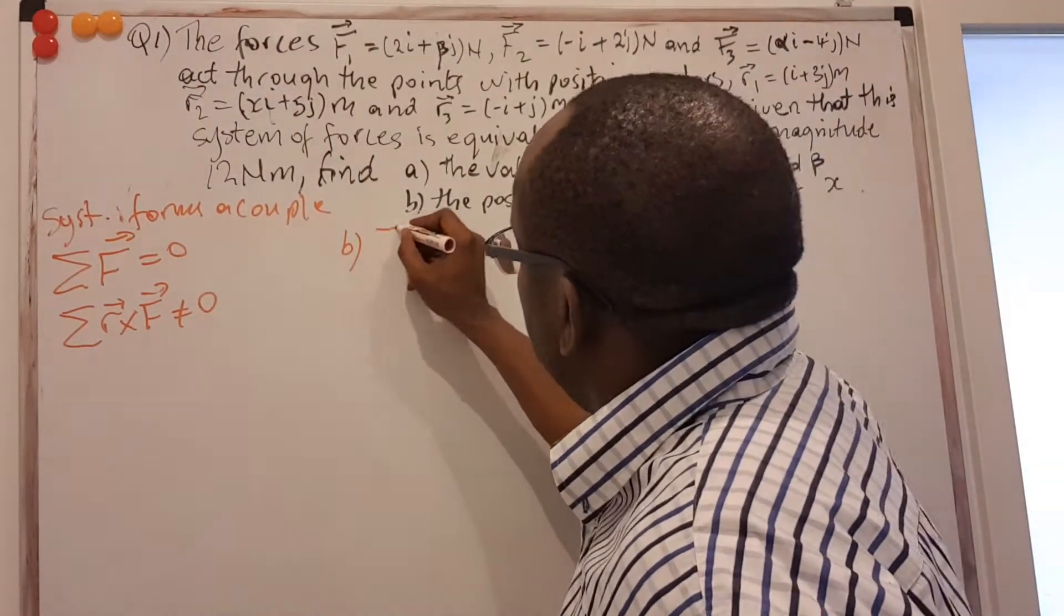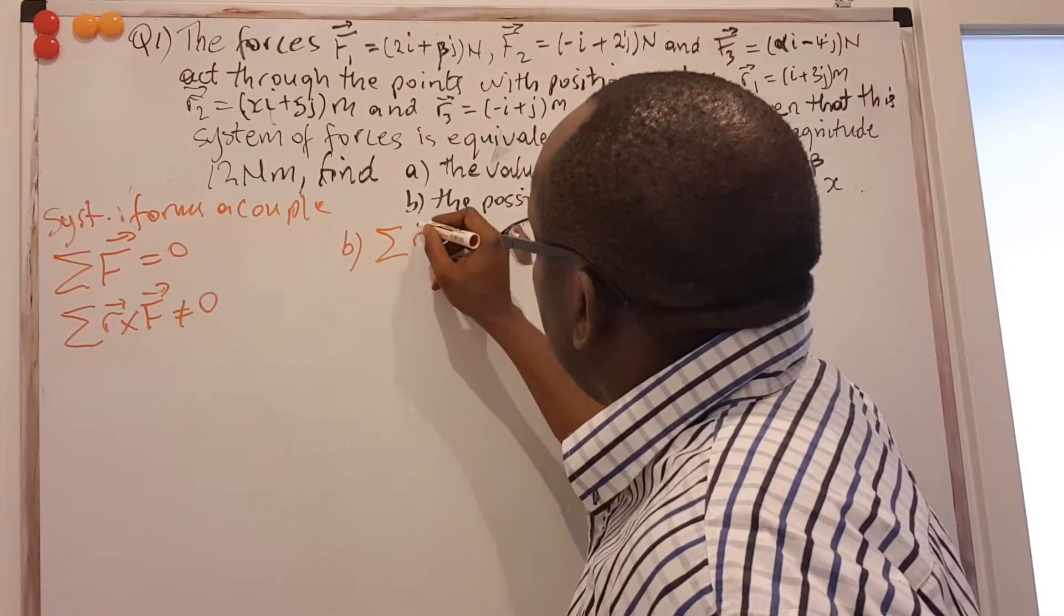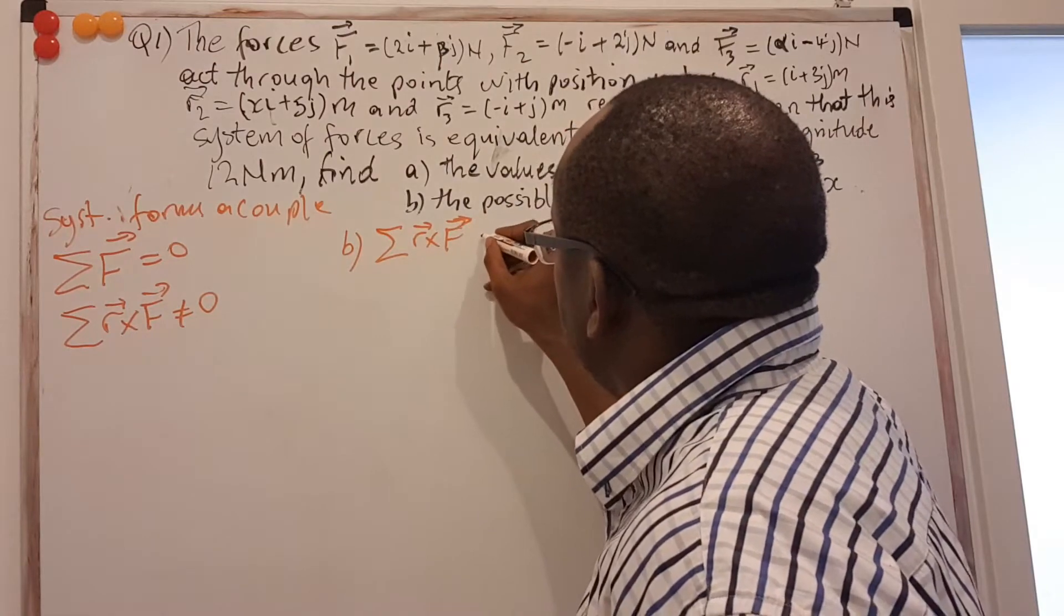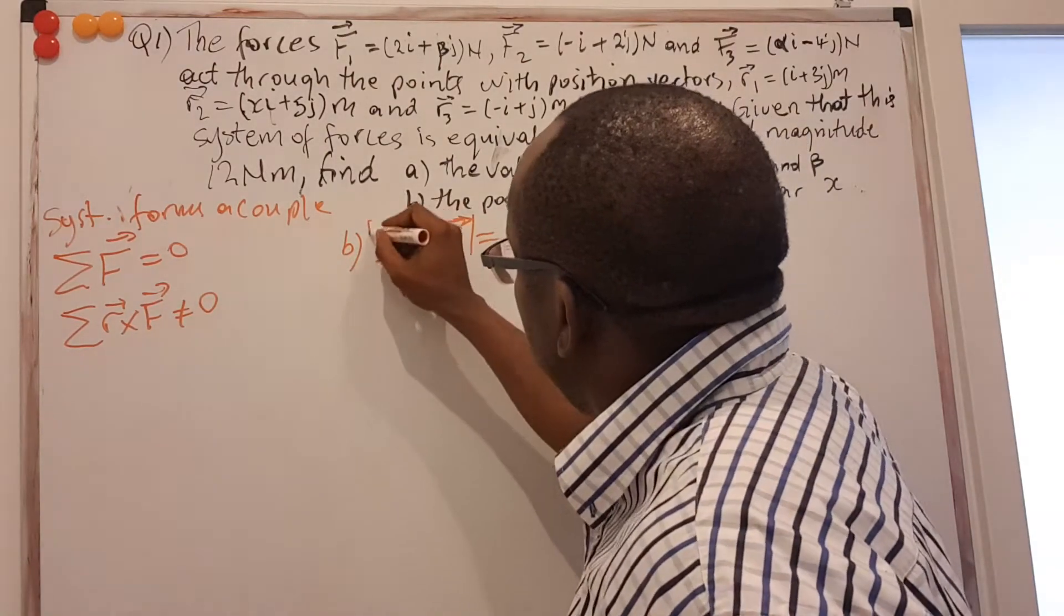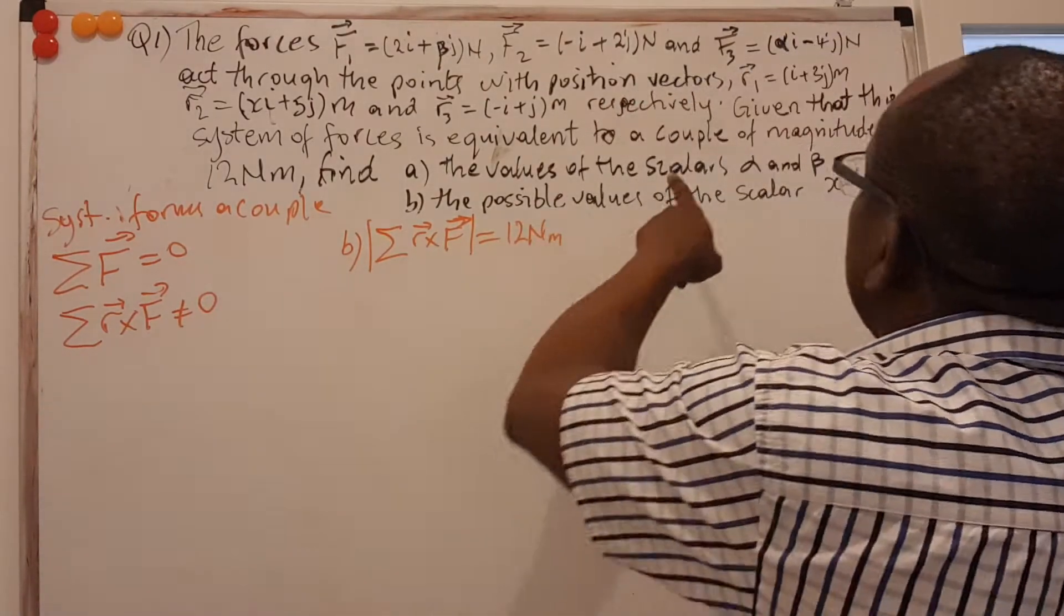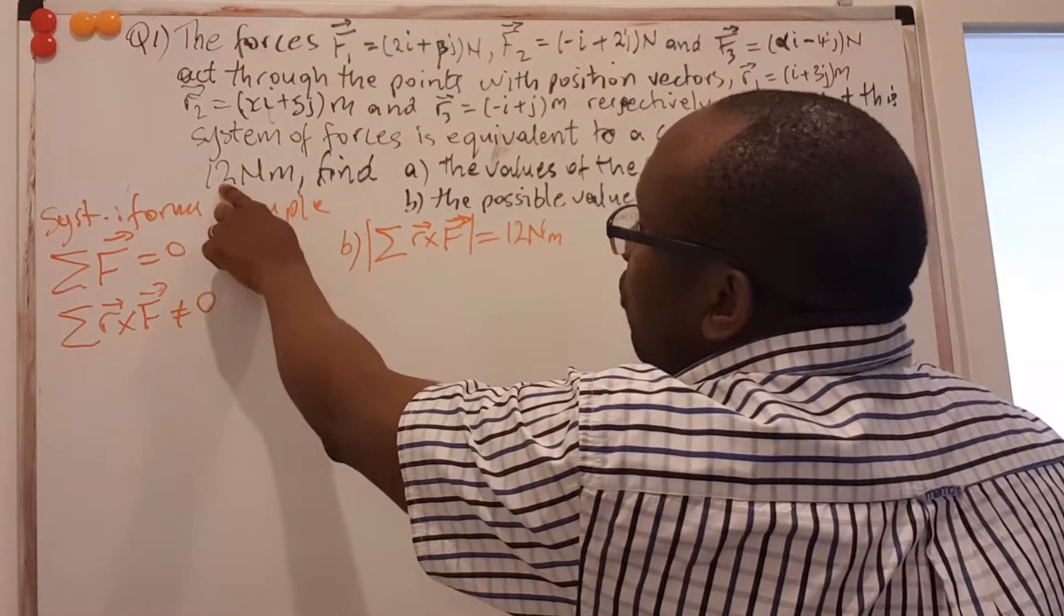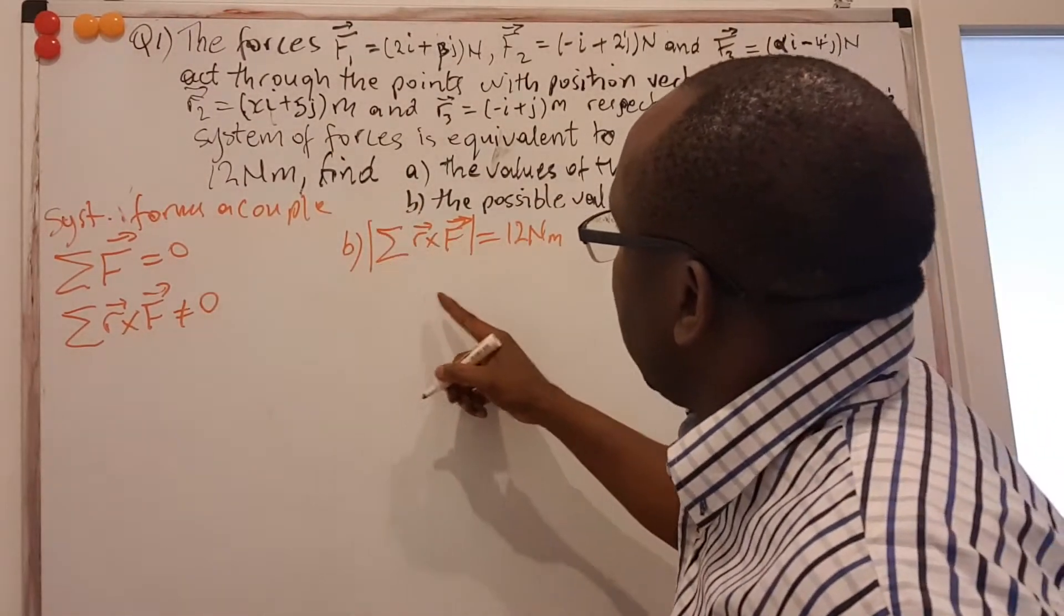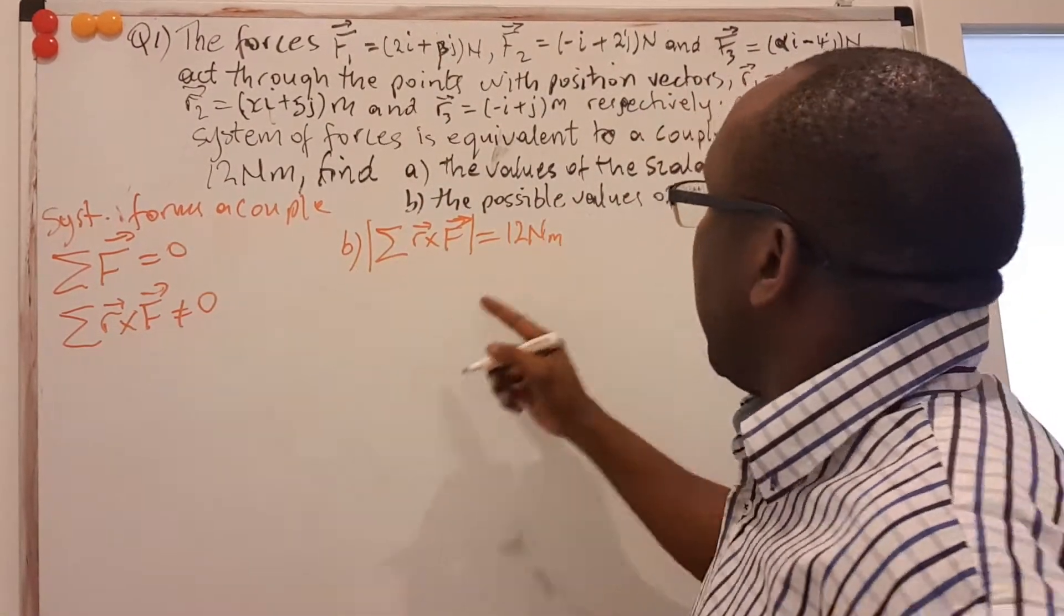So for the B part, we are expected to sum these moments. And we are told that when we take the magnitude of that sum, it should be equal to 12 Nm. That's what we're told. The magnitude of the couple is equal to 12 Nm, force times distance. So what we have to do is try to come out with this left answer and equate it to 12.